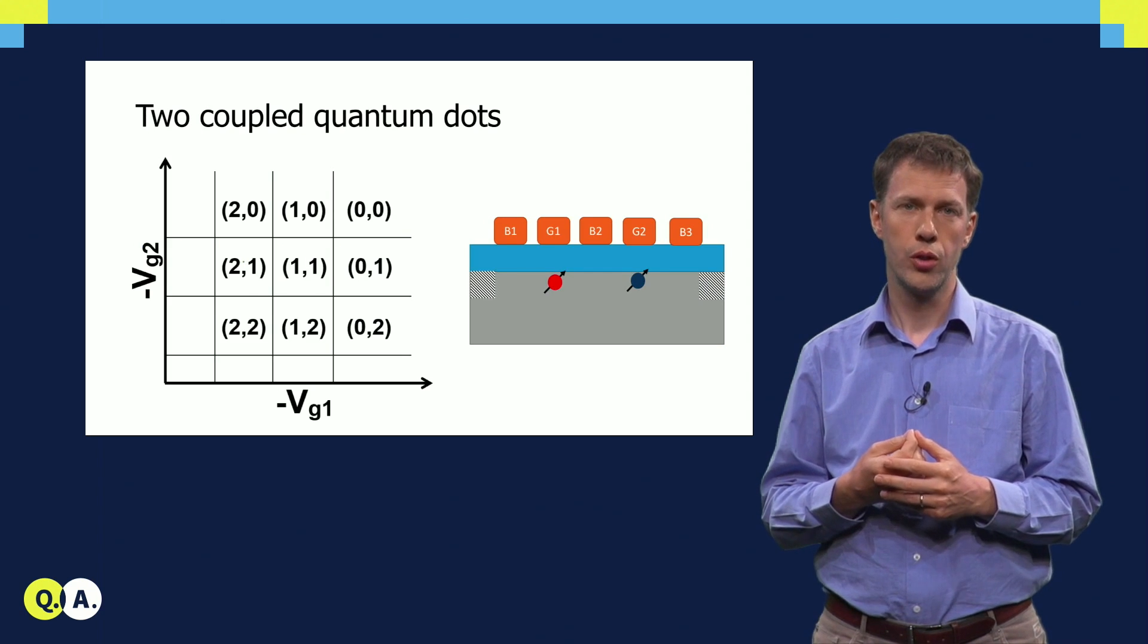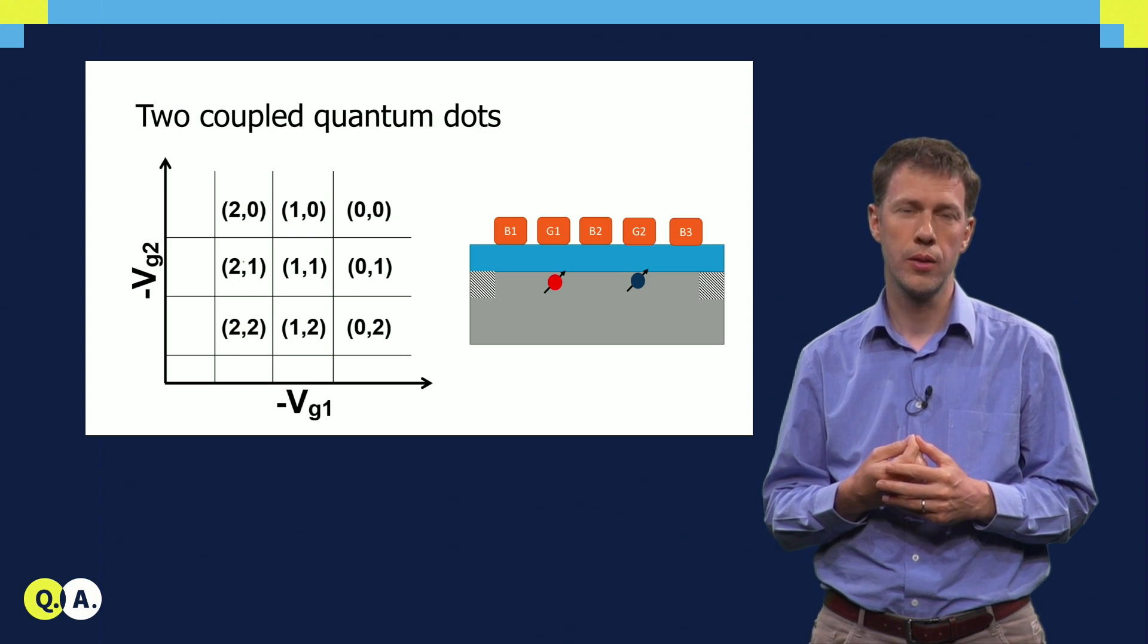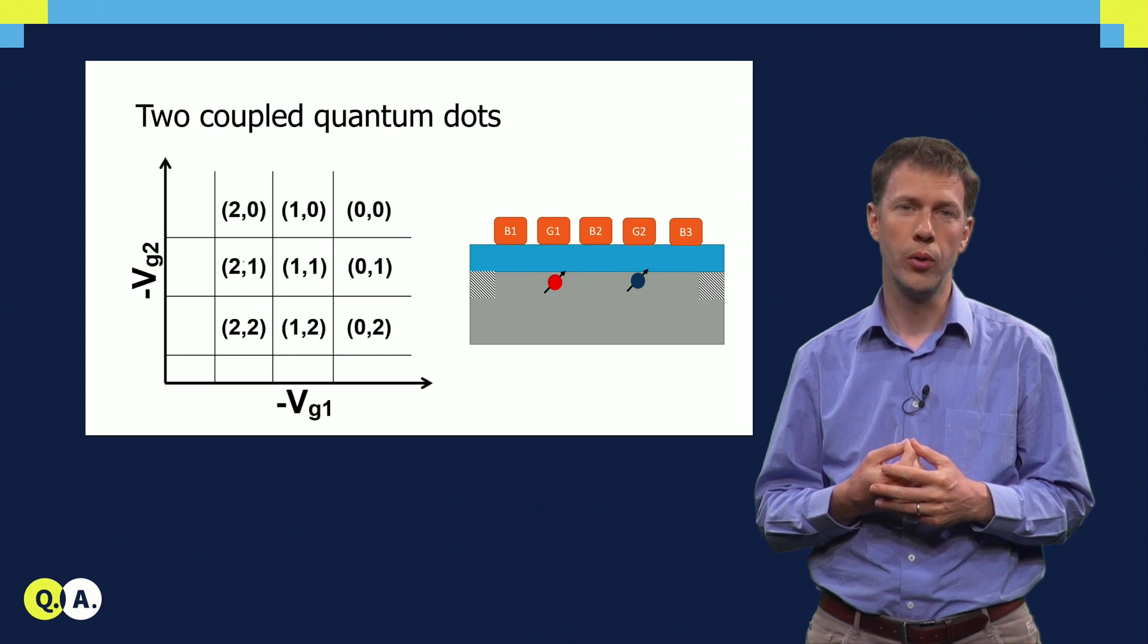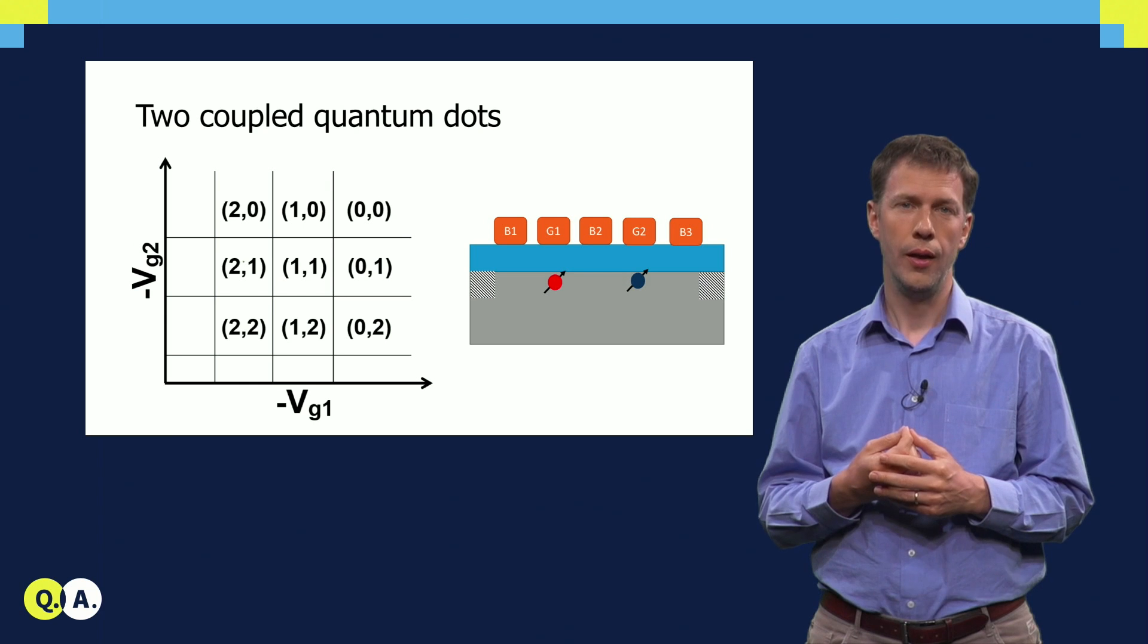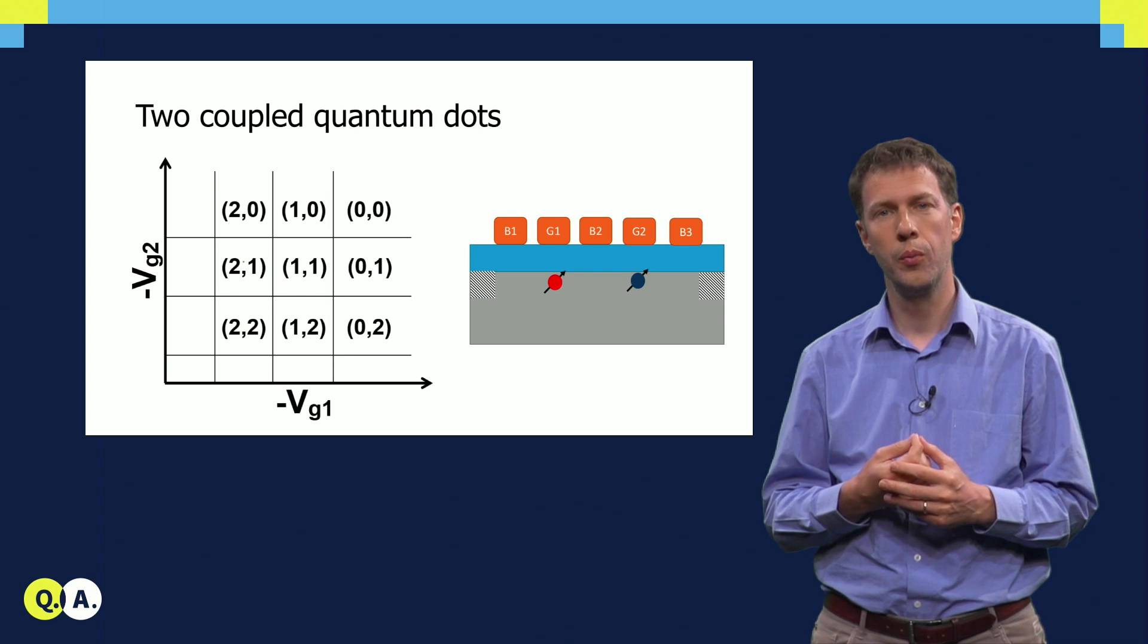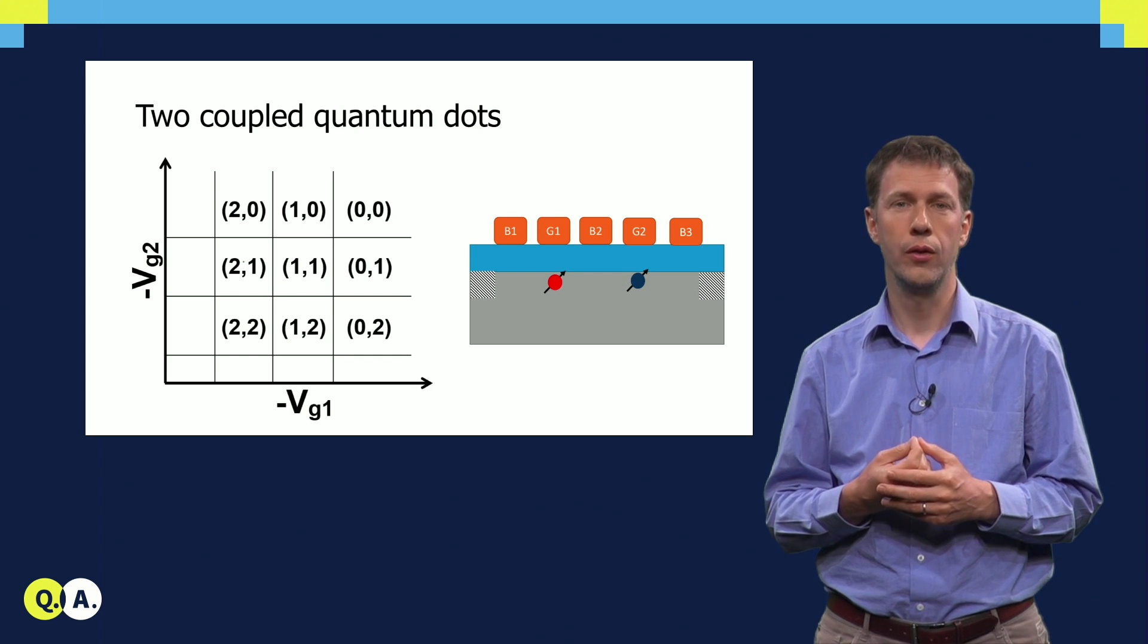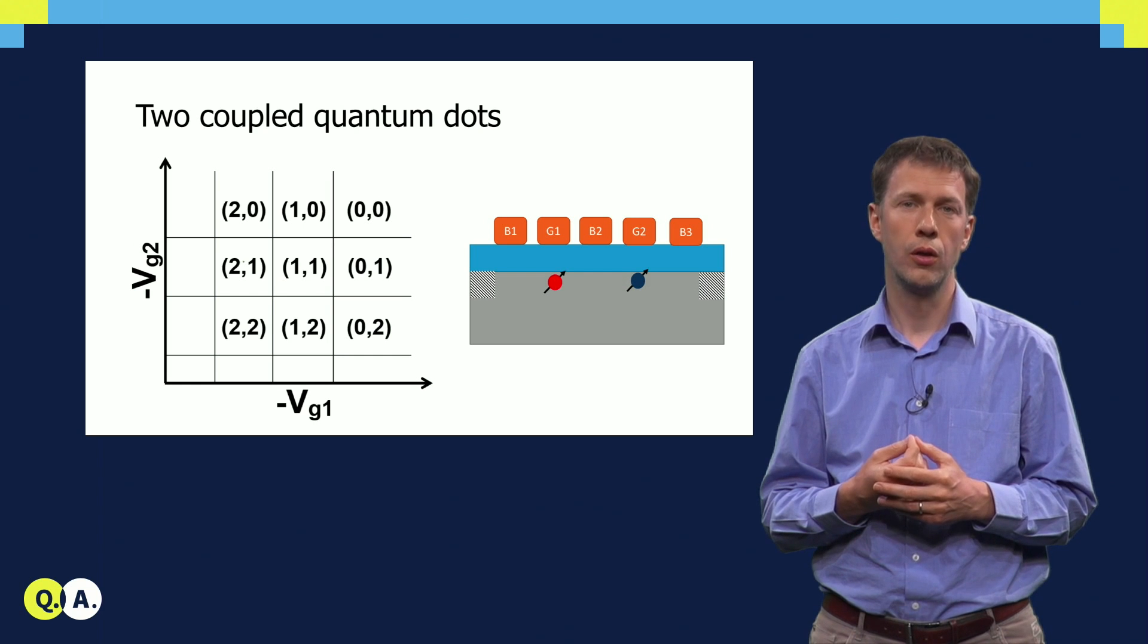If we draw a gate voltage space, where the gate voltage that controls the potential of one quantum dot is plotted on the horizontal axis, and the gate voltage that controls the second quantum dot on the vertical axis, then if the two quantum dots are uncoupled, for specific voltages on the first gate electrode, electrons are added to the first quantum dot. These transitions are represented by the vertical lines in the plot. And similarly, for specific voltages on the second gate electrode, electrons are added one at a time to the second quantum dot. These are the horizontal lines.